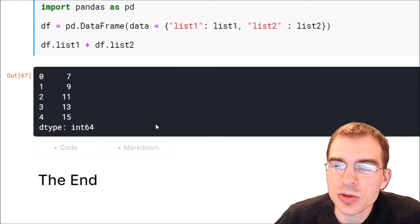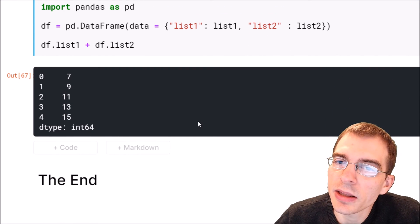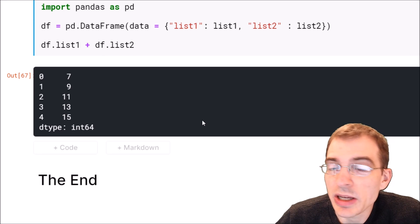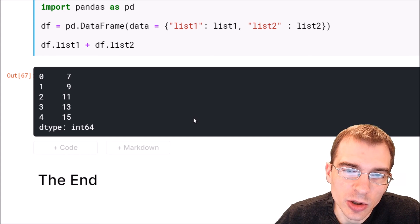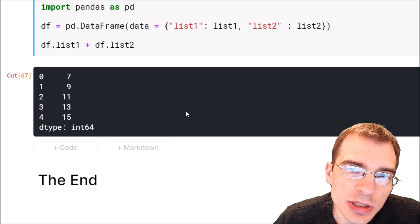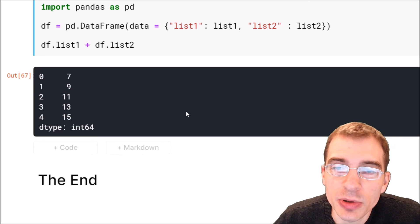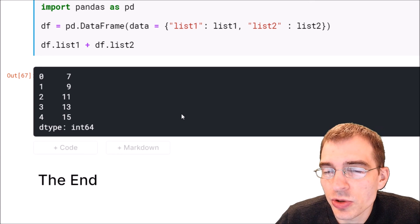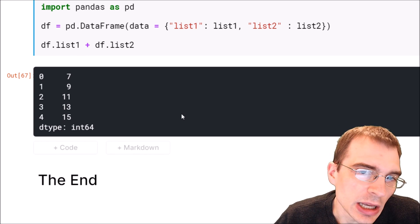So there are three different ways you can do element-wise math in Python based on whether you're using base Python, NumPy, or pandas. All the code for this video is available in the description below. If you found this video useful, you can drop a like or hit subscribe. Thanks for watching.